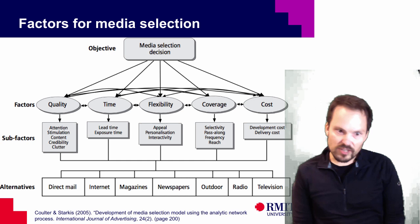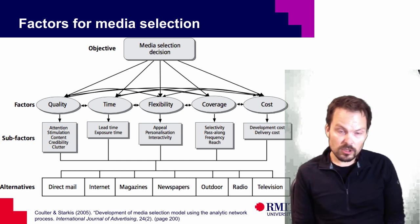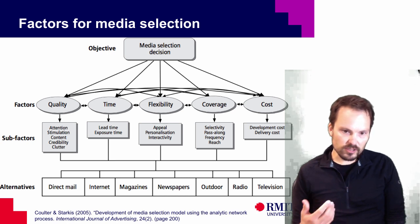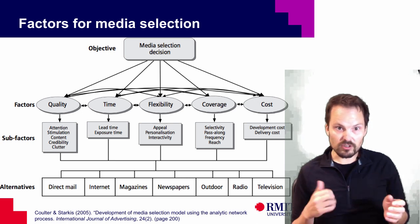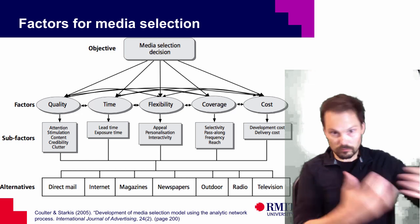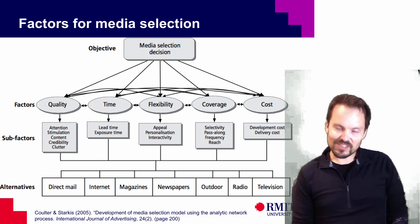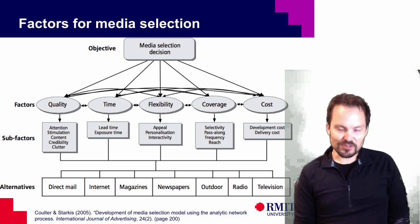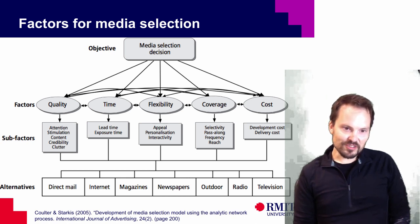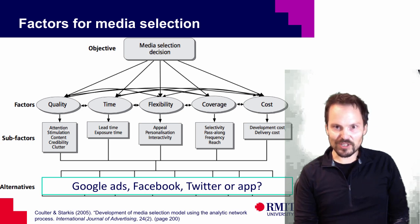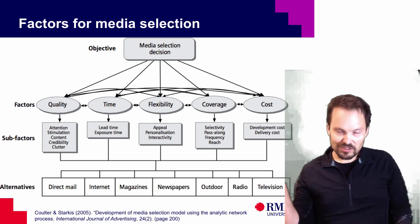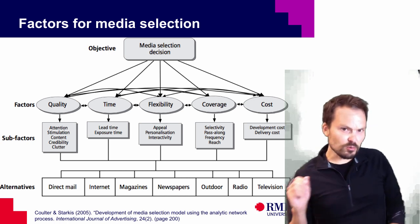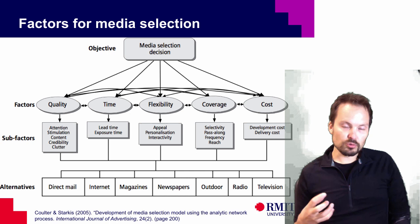Here's an interesting paper from Culture and Stark in the International Journal of Advertising, now about ten years old, which looks at media selection and the factors businesses go through when selecting media for their messages. The alternatives listed include direct mail, internet, magazines, newspapers, outdoor, radio, and television. These days we might list Google Ads, Facebook, Twitter, apps, and various other digital media — perhaps lumping the others together as traditional media. What's changing is that we're getting more channels to use as marketers.